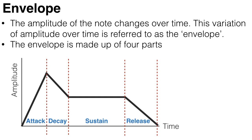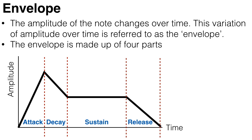When you hit a piano key, at first you hear a loud ringing as the hammer hits the string, and then there is an immediate fall in volume as the note is sustained. This variation of amplitude over time is referred to as the envelope.